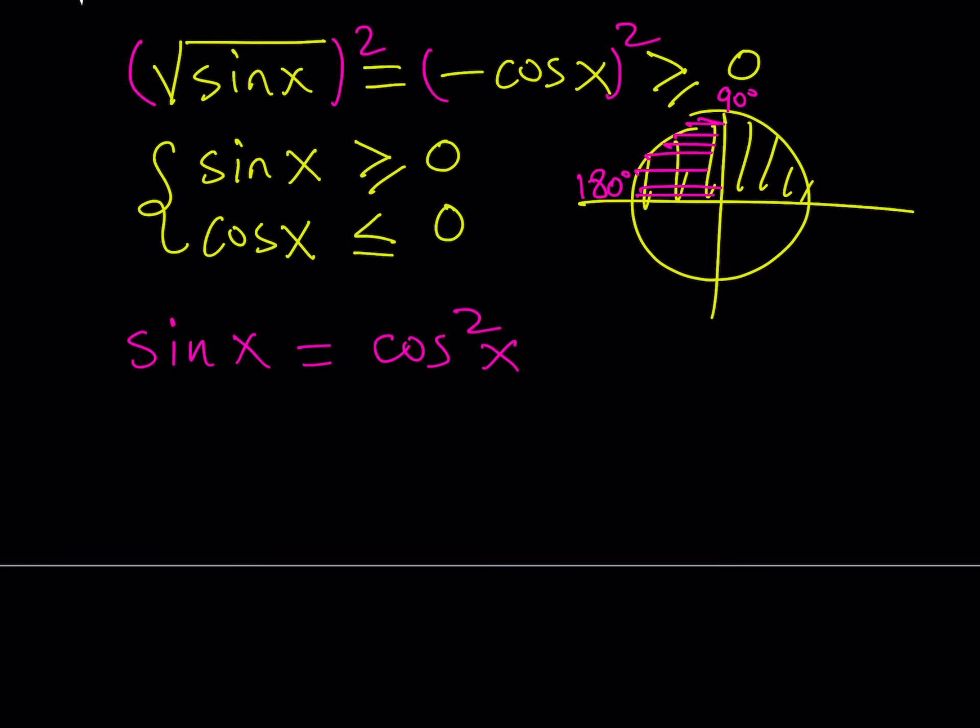There's a relationship between sine and cosine so instead of cosine squared I can write 1 minus sine squared using the famous Pythagorean identity.